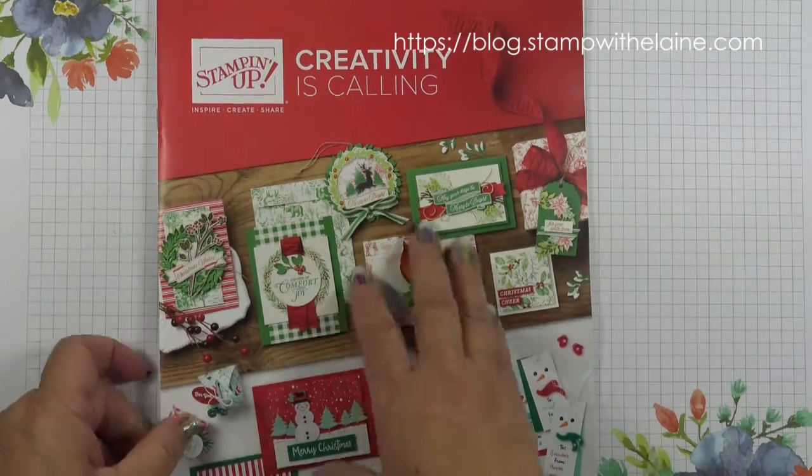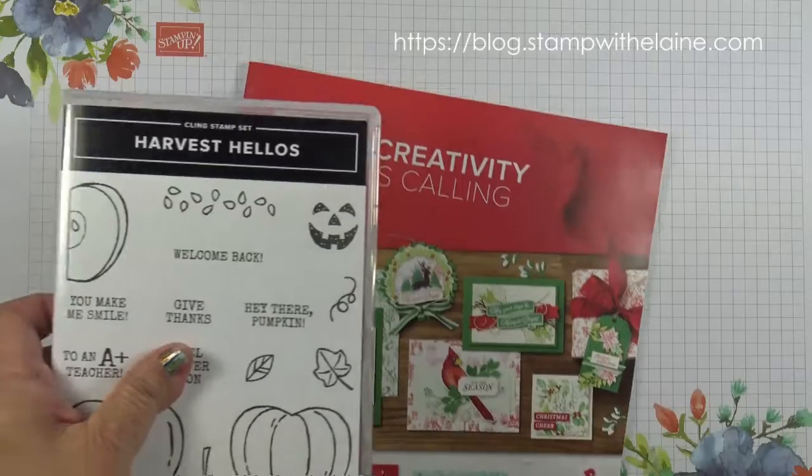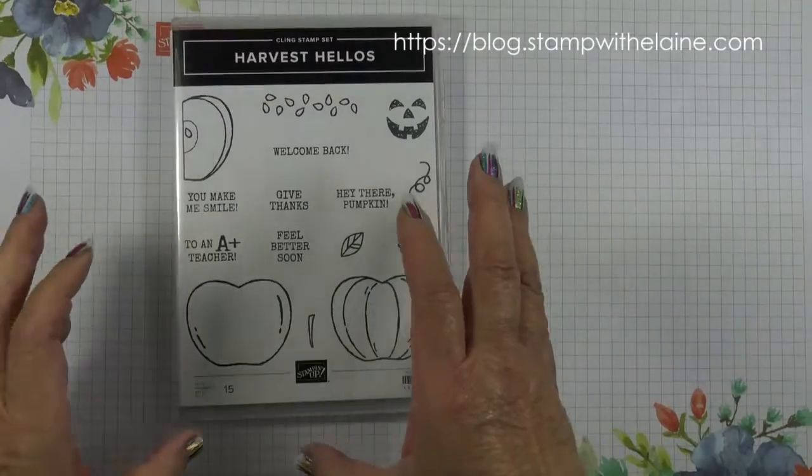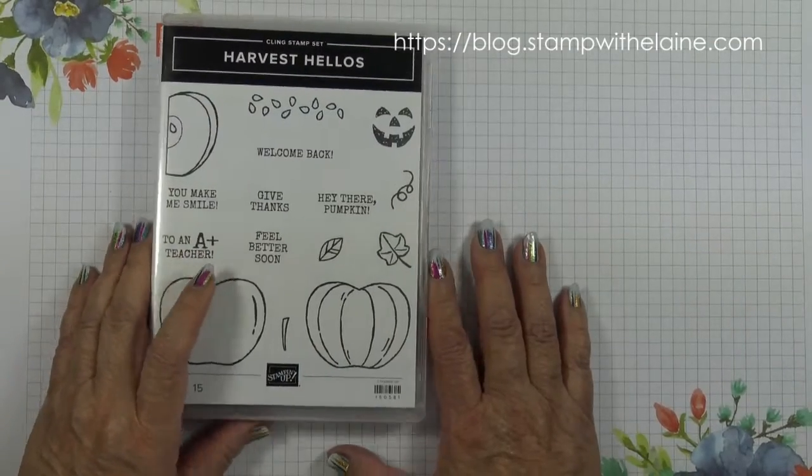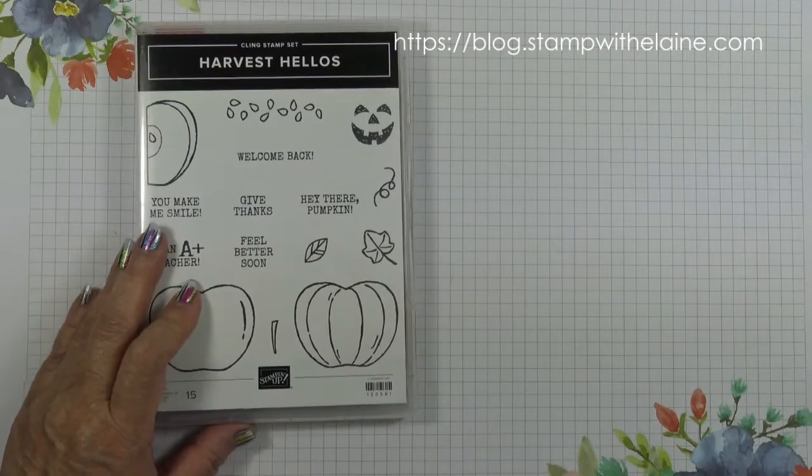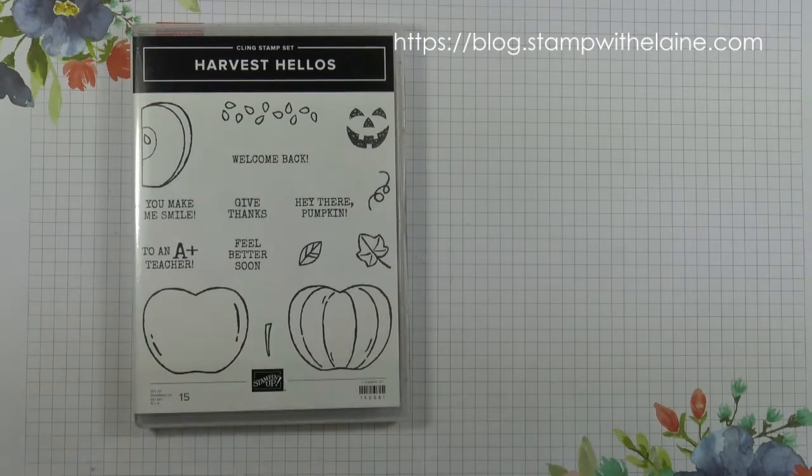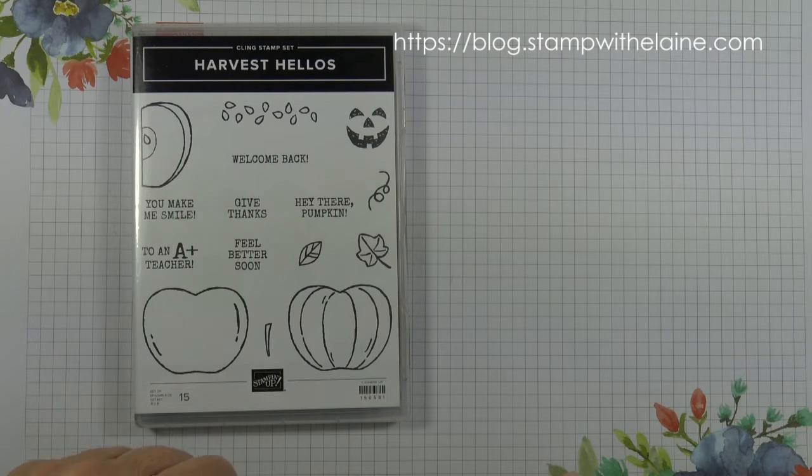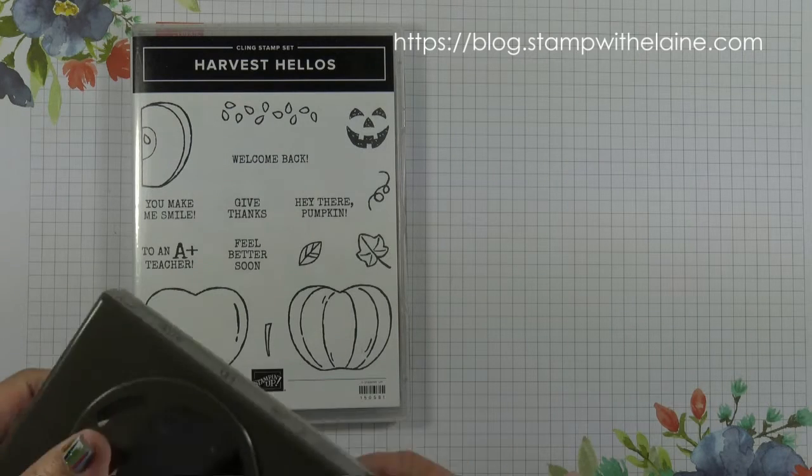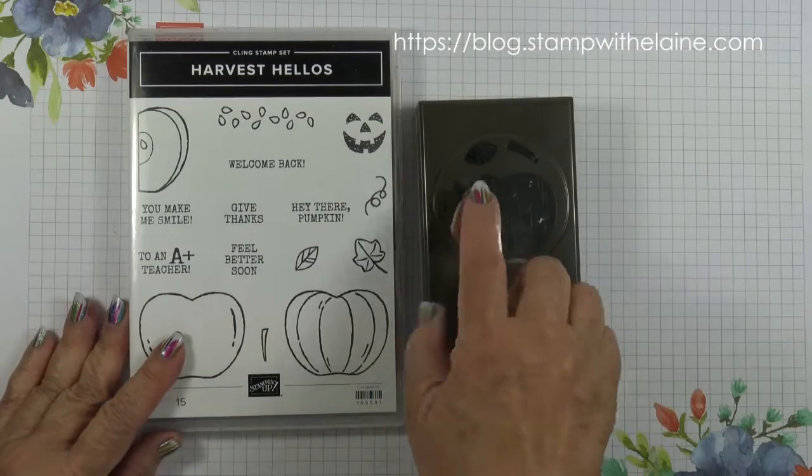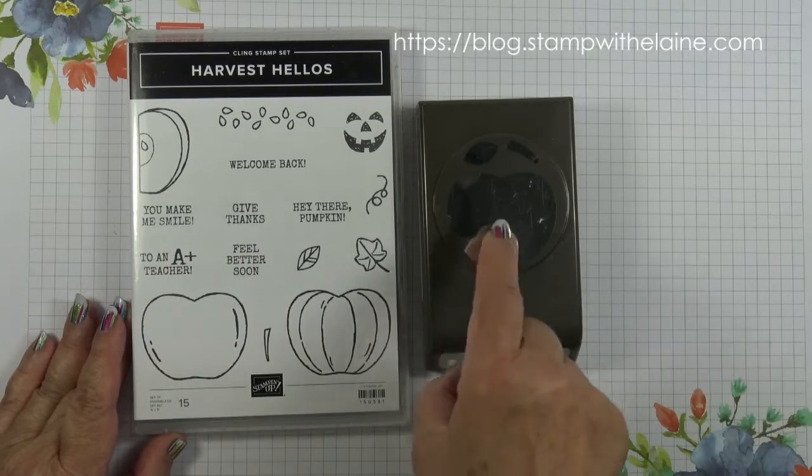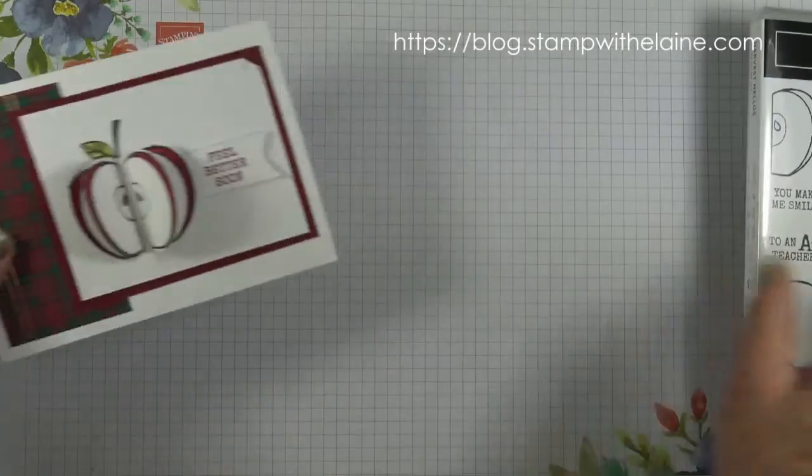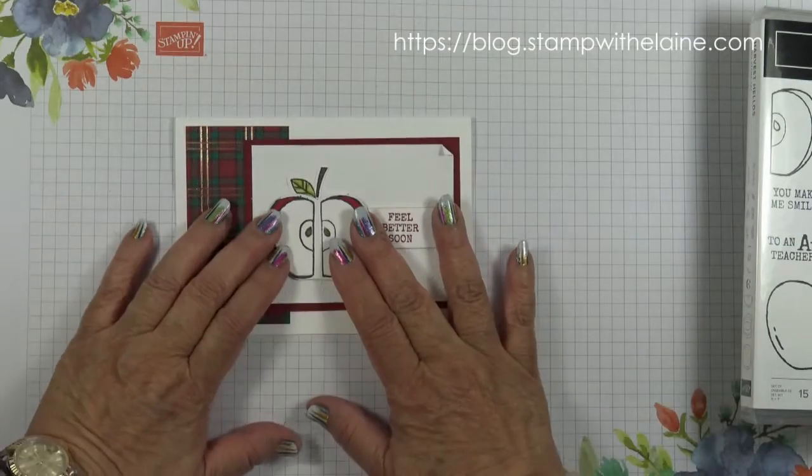So today's sneak peek is this harvest hellos bundle. I can't show you what's inside the catalogue. We've been asking for more punches for ages and Stampin' Up have listened and there are 10 new ones to choose from which includes ones that are sold as a pair or as a full punch pack. So today we're going to be using the Apple Builder Punch and I'm going to show you how I made this pop-up apple which folds flat for posting.